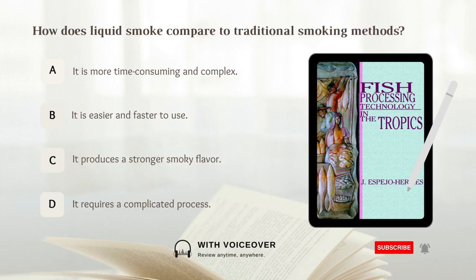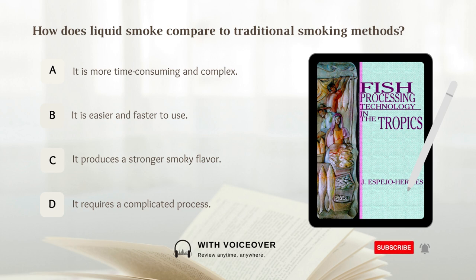How does liquid smoke compare to traditional smoking methods? A. It is more time-consuming and complex. B. It is easier and faster to use. C. It produces a stronger smoky flavor. D. It requires a complicated process. Answer: B. It is easier and faster to use.